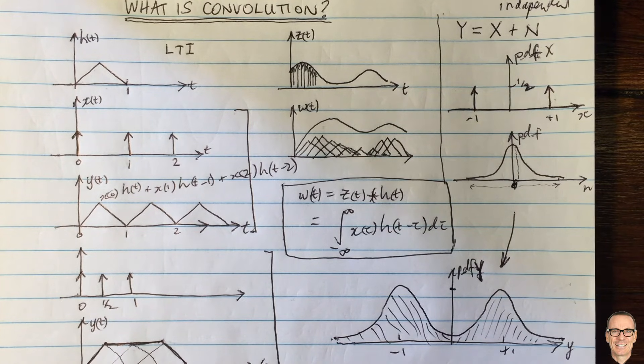So this is another example where convolution arises — not just in linear time invariant systems for inputs and outputs, but also when you add random variables and the output PDF is a convolution of the two input PDFs. If this video helped you, don't forget to like the video, subscribe to the channel for more videos, and check out the webpage in the link.